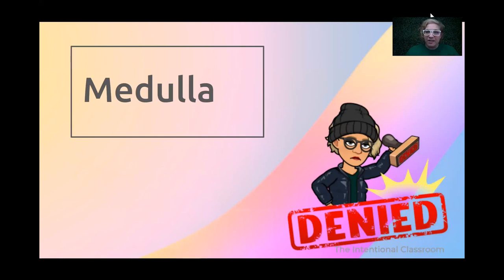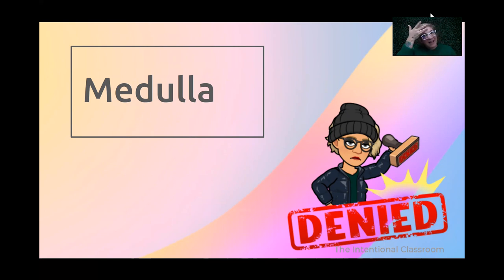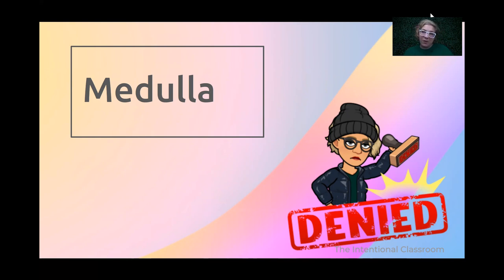Finally, we have the medulla. The medulla doesn't have a purpose — as of right now, science has not recognized a true reason for it. It is a very thin, transparent sheath inside the hair, and a lot of people don't have it. My fine blonde hair probably does not have a medulla if we put me under a microscope. Just know that it is the third layer — that could end up on a state board for you — but it does not have a true purpose in what we do for hair.